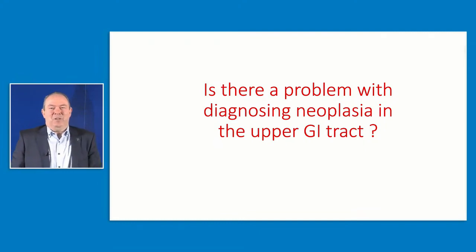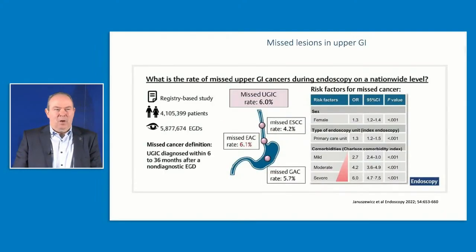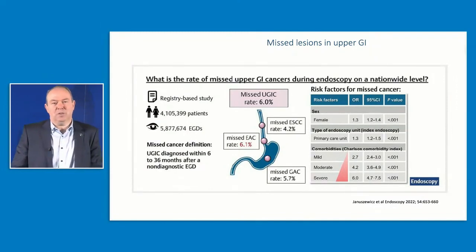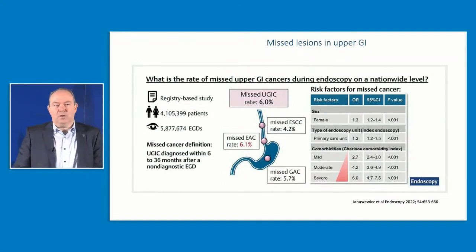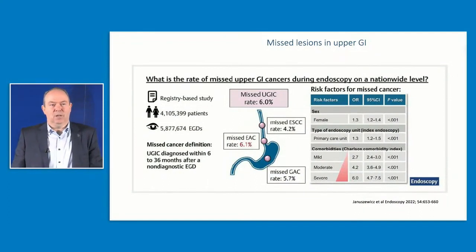The first question is: why was I given this talk? Is there a problem with the diagnosis of neoplasia in the upper GI tract? Looking at a recent publication from Poland — a registry-based study with over 4 million patients and almost 6 million endoscopies — missed upper GI cancer diagnosed between 6 and 36 months after a diagnostic endoscopy with no significant findings was 6%. For early squamous cell cancer this is 4.2%, adenocarcinoma 6.1%, and gastric cancers 5.7%. This was more frequent in patients with severe comorbidity and in female patients where less suspicion was raised.